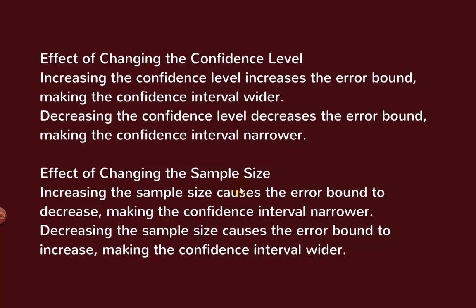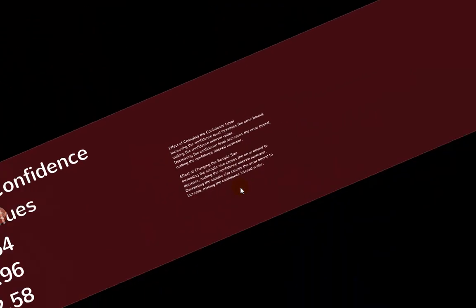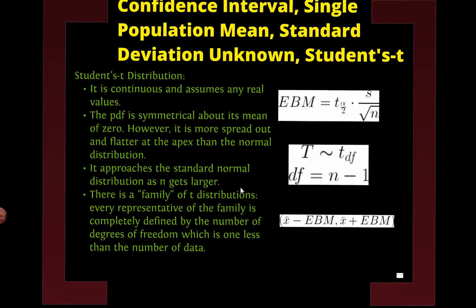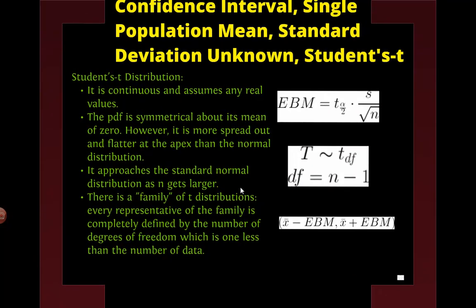Now, this here was for knowing the population standard deviation. In most cases, we don't do that. We don't know the population standard deviation. So we use this other formula called the student T distribution. And this was created by somebody who worked for Guinness. He was testing beer. Yes, statistics is very important in beer. It's a good thing to know.